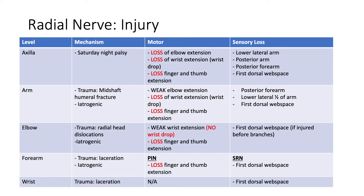At the level of the axilla, a common mechanism known as Saturday night palsy results from direct compression of the radial nerve onto the humerus. At this level one would expect loss of elbow extension, loss of wrist extension resulting in wrist drop, and loss of finger and thumb extension. Sensory loss occurs along the lower lateral arm, the posterior arm, the posterior forearm, and the first dorsal web space. Essentially there is total deficit of radial nerve function.